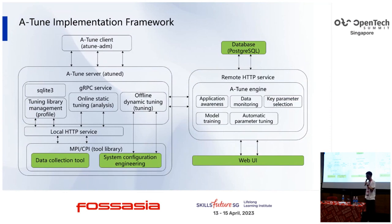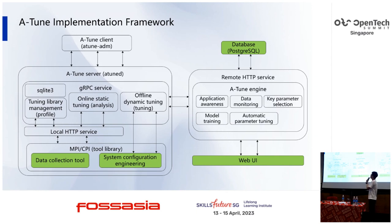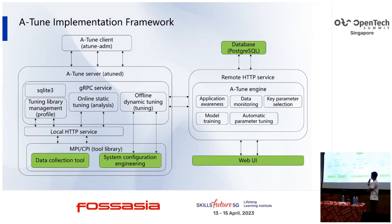The ATUN implementation framework includes three parts: the ATUN server, ATUN client, and ATUN engine. The ATUN server includes data collection tools and system configuration engineering, and must be installed on the target device. The ATUN client is used to interact with the user and output results. The ATUN engine includes all algorithms such as classification models, key parameter selection models, model training, and automatic parameter tuning. The three parts can be installed on different machines and communicate through RPC.